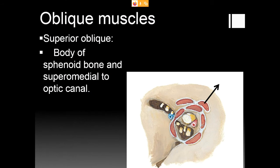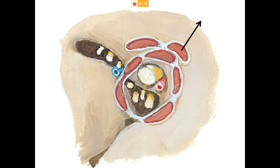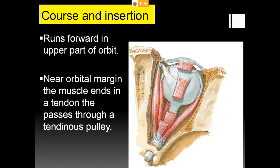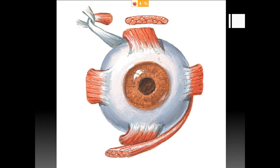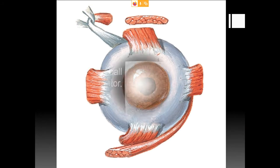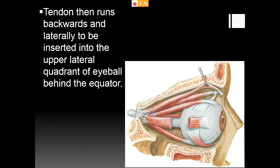Coming to the oblique muscles: the superior oblique arises from the body of the sphenoid bone, superomedial to the optic canal. It runs forwards in the upper part of the orbit, exactly above the medial rectus. Near the orbital margin, the muscle ends in a tendon that passes through a tendinous pulley (trochlea), then runs posteriorly to reach the equator of the eyeball. The tendon is inserted into the posterolateral quadrant of the eyeball, behind the equator.